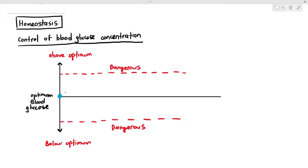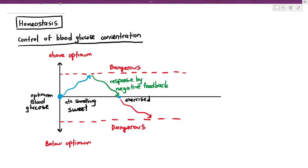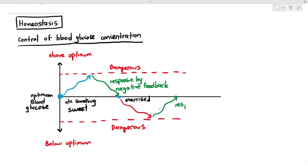For example, if you had an optimum blood glucose concentration but ate something sweet — like chocolates, vanilla ice cream, or a sweet drink — the blood glucose concentration will go up. In homeostasis, your body has to correct it and bring it back down. That response is called negative feedback. Conversely, if you were to exercise or fast — especially during Ramadan — the blood glucose concentration might go down, but your body will respond via negative feedback and bring it back up.